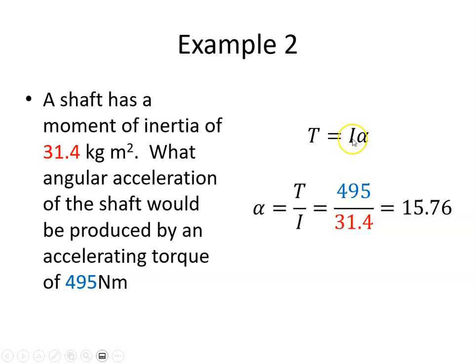Torque is equal to I alpha. Rearranging that, we have alpha is equal to torque over moment of inertia. So 495 Newton meters divided by 31.4 kilogram meters squared. That gives an angular acceleration of 15.76 radians per second squared.